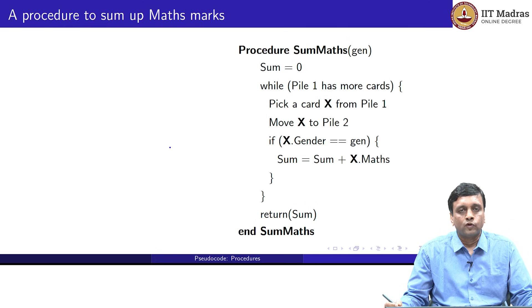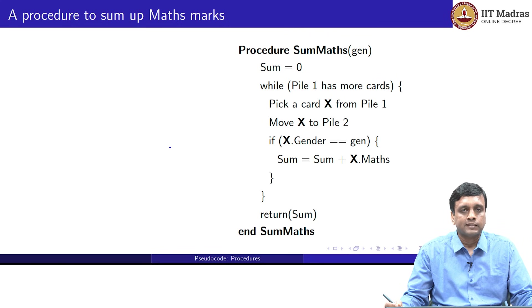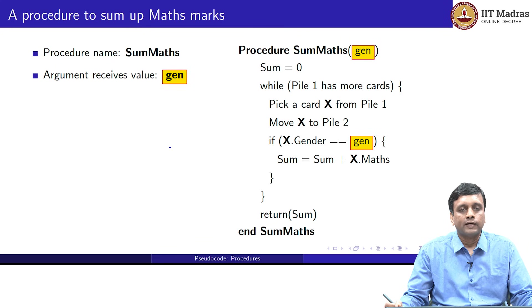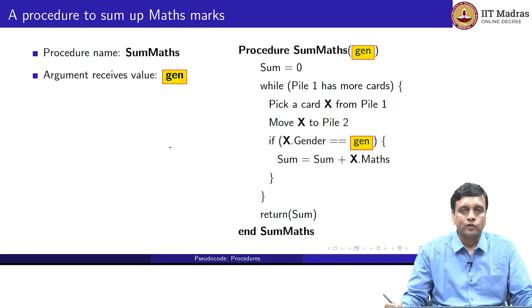Here is our notation in pseudocode for these procedures. This procedure generalizes the sum of the boys' maths marks and the sum of the girls' maths marks into a single piece of code which allows you to choose the gender from outside. This procedure has a name because we have to call it. We need to invoke it with the right value to tell it what to do, so it has an argument. We call the argument 'gen' inside the procedure. This value that we pass is supposed to be the gender, and it will substitute for the specific check for M or F in the earlier two pieces of code.